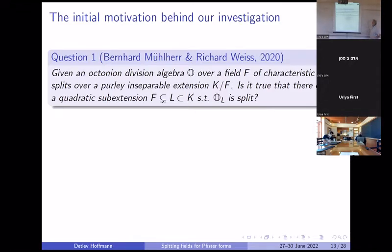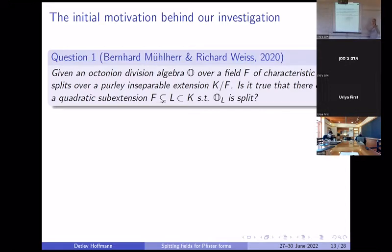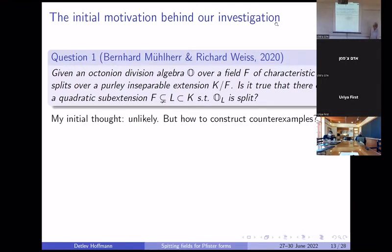This was the initial motivation behind the work I did. This was a question which was asked to me: given a field of characteristic two, you have an octonion division algebra over that field, and it splits over a purely inseparable field extension. Is it true that you can always already find a quadratic sub-extension? What they wanted was basically filling one slot — if you think of this octonion algebra as having three slots, filling one slot with this quadratic extension. They hoped for that, but I had to disappoint them; my initial thought was it's unlikely, and being unlikely and knowing it's not true are two different things.